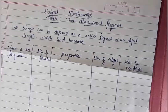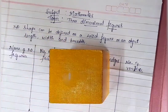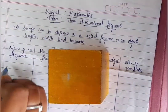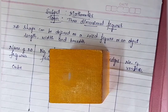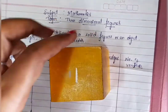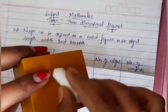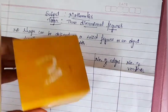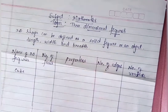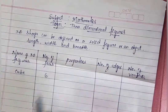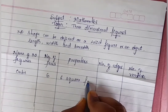The first figure is a cube. Observe this figure. Count the number of faces: one, two, three, four, five, six. So a cube has six faces. Its property is six square faces.